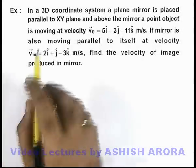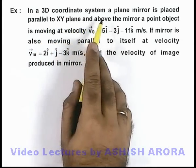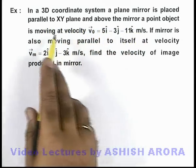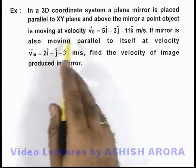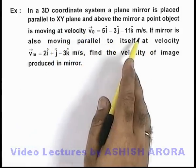In this example we are given that in a 3D coordinate system, a plane mirror is placed parallel to the XY plane, and above the mirror a point object is moving at a velocity v₀ vector in meters per second.